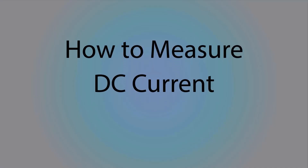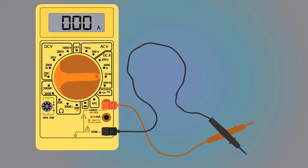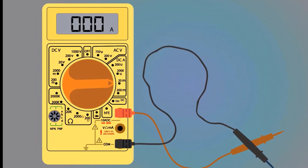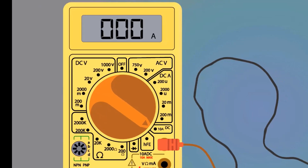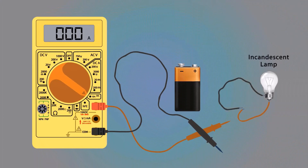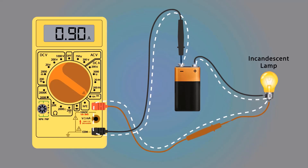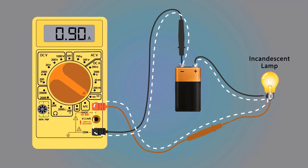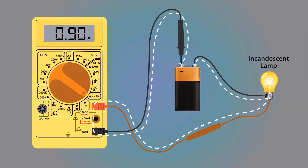How to measure DC current with a multimeter. Always connect the black wire of the multimeter here and the red wire here, not here — because the load may consume more current. Select the maximum range of DC current, which is 10 amperes. Take a 9-volt battery and an incandescent lamp. Connect the black wire of the lamp to the positive terminal of the battery, then connect the black wire of the multimeter to the negative terminal. Connect the red wire of the lamp to the positive probe of the multimeter. The circuit is completed and current flows through the lamp. The multimeter display shows 0.9 ampere. Always connect the multimeter in series with the circuit to measure current.